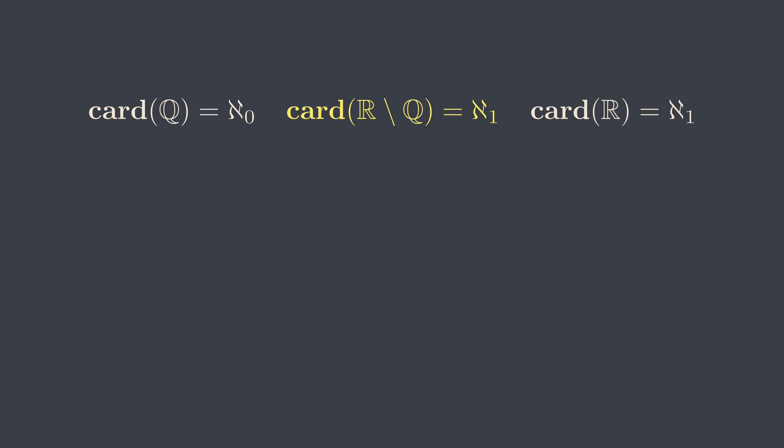By contradiction, the cardinality of irrational number must also be aleph-1, because if it is not, then the union of 2 aleph-0 infinities must also be an aleph-0 infinity, which is a contradiction.